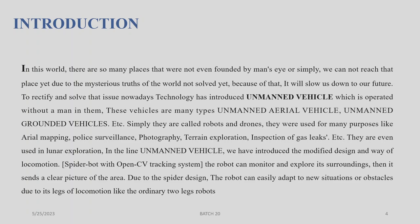Because of that, it will slow us down in our future. To rectify and solve the issue, nowadays technology has introduced unmanned vehicles which are operated without a man in them. These vehicles are of many types: unmanned aerial vehicle, unmanned ground vehicle, etc. Simply they are called robots or drones.